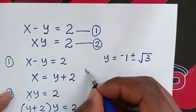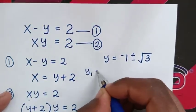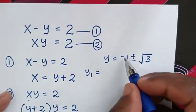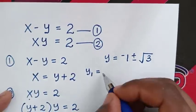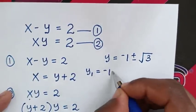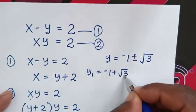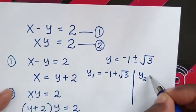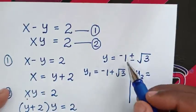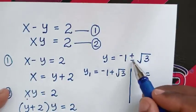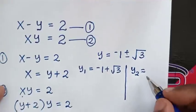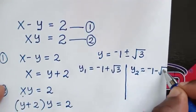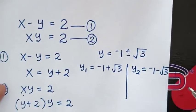We have two solutions. The first value of y is equal to negative 1 plus square root of 3. The second value of y is equal to negative 1 minus square root of 3.